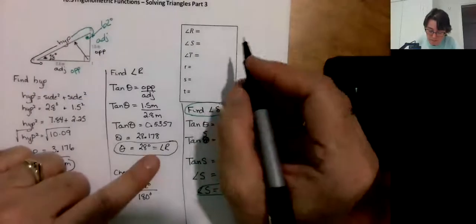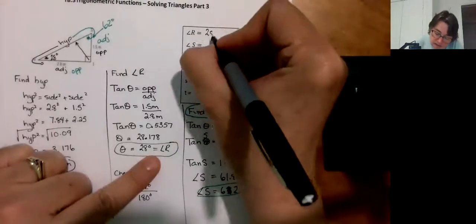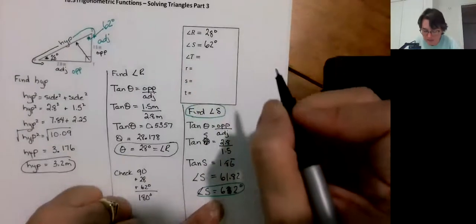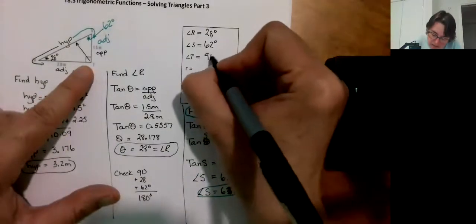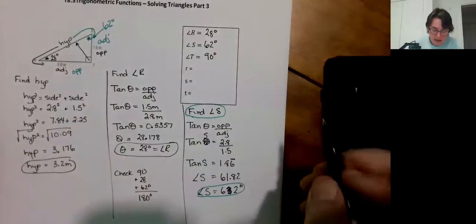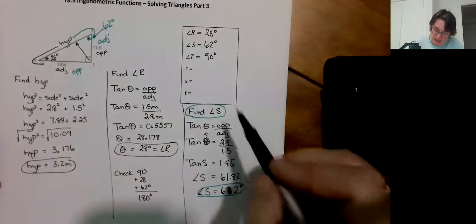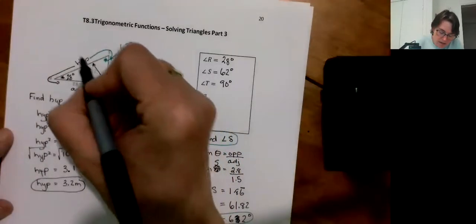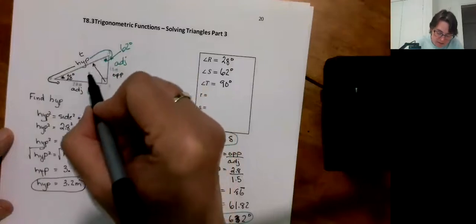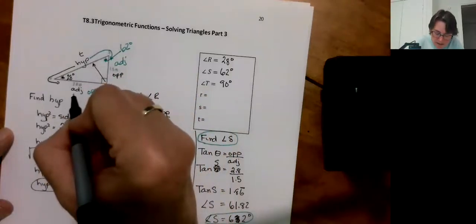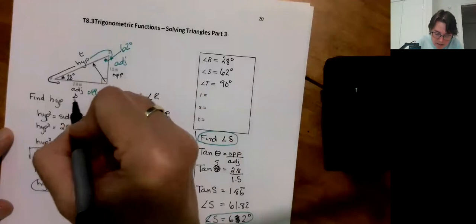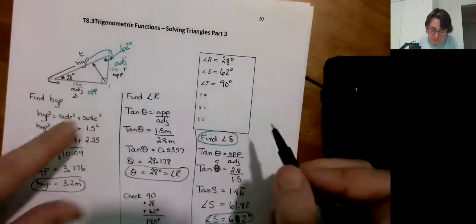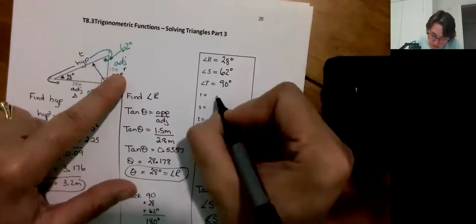So let's figure out, we got angle R was 28 degrees. Angle S was 62 degrees. Put the degrees sign in. It doesn't work to. Angle T was a freebie. That was 90 degrees. And now, let's see what we can do with R, S, and T. So I go T, I go across. That's going to be little t. S going across to the opposite side. That's going to be little s. And then this one must be little r.